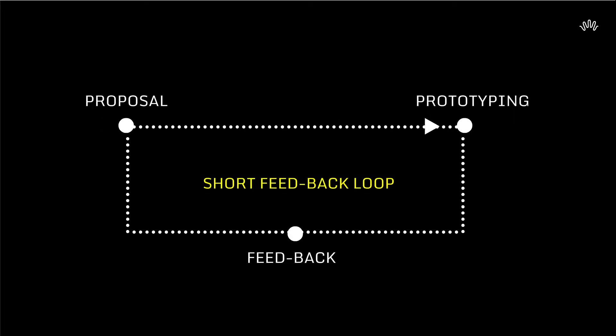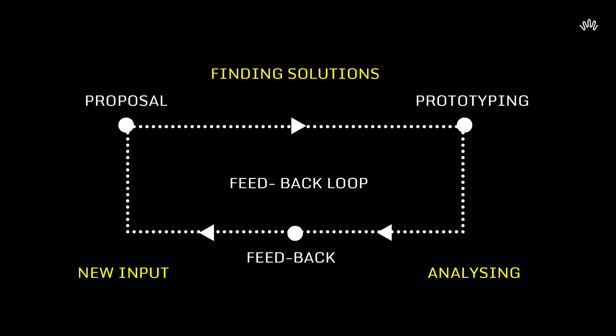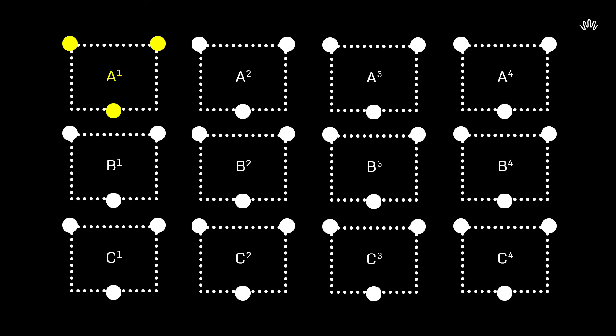The methodology is we try to create a short feedback loop. This short feedback loop is an evolution between a proposal, a prototype, and the feedback that comes from the prototype. This will generate different research elements. In this diagram you can see how our first loop A1 will bring us to new proposal A2 and so on.